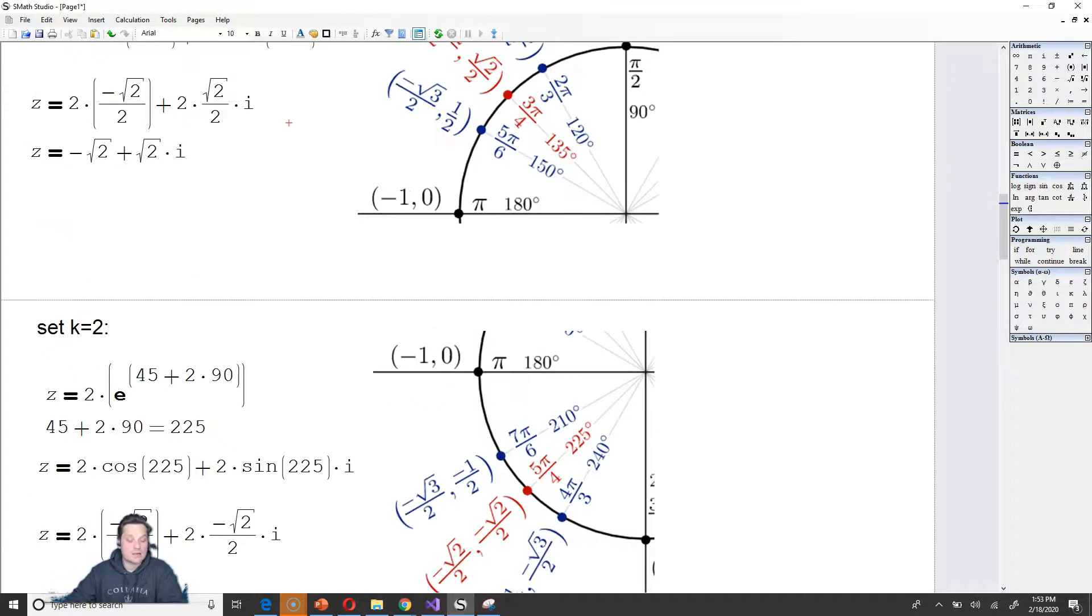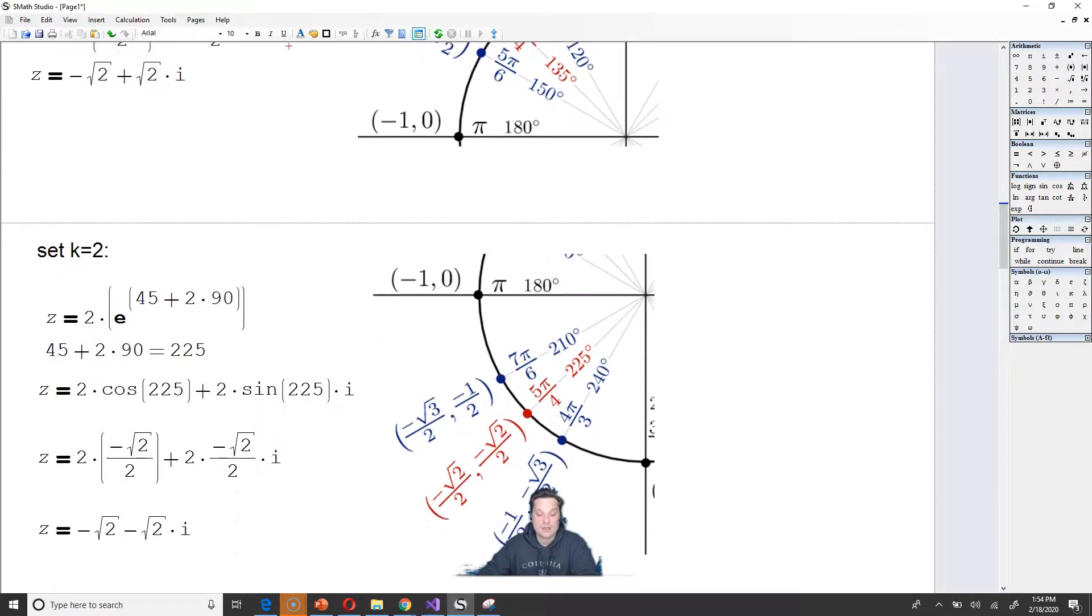When k has the value 2, that corresponds to 2 times e to the 45 plus 2 times 90. So 45 plus 2 times 90, that's 225. So that corresponds to this angle right here, 225 degree angle, or 5pi over 4 radians. There, the x-coordinate is negative root 2 over 2. The y-coordinate is also negative root 2 over 2. So you plug those in.